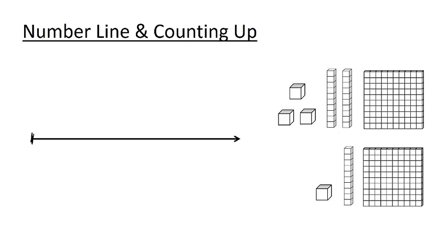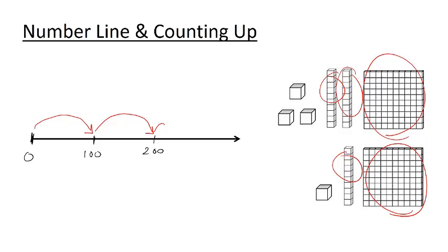Counting up on the number line is also a nice early strategy to use. Here, we begin with the larger blocks first and count in the following way. Well, I have two hundreds, so I'm going to make two big jumps of size 100. So one jump to the number 100, and the second jump to the number 200. And then I have one, two, three tens. So making the three smaller jumps of size 10 each gets us to 210, 220, 230.